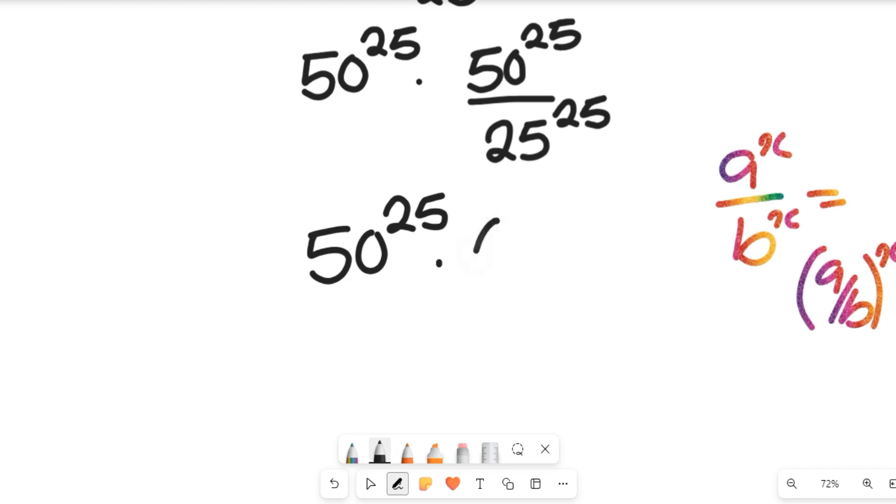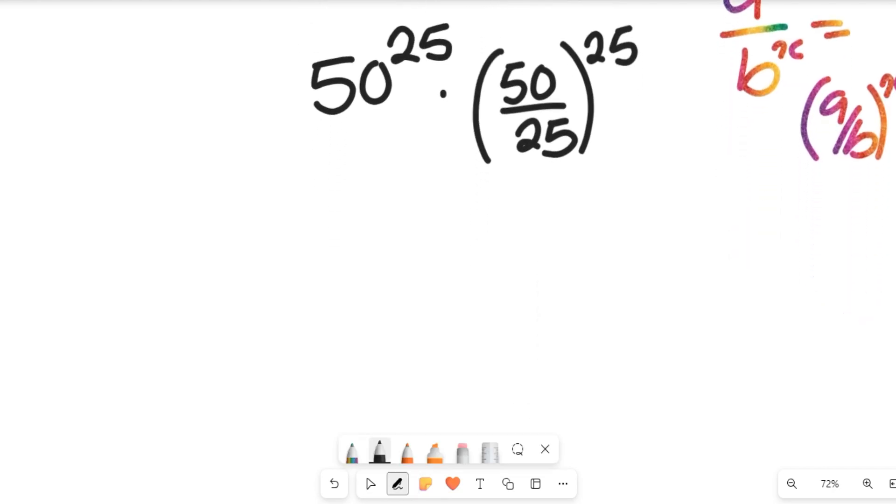So this expression can now give me 50 to the power of 25 multiplied by 50 divided by 25 all to the power of 25. 50 divided by 25 can simply give me 2.